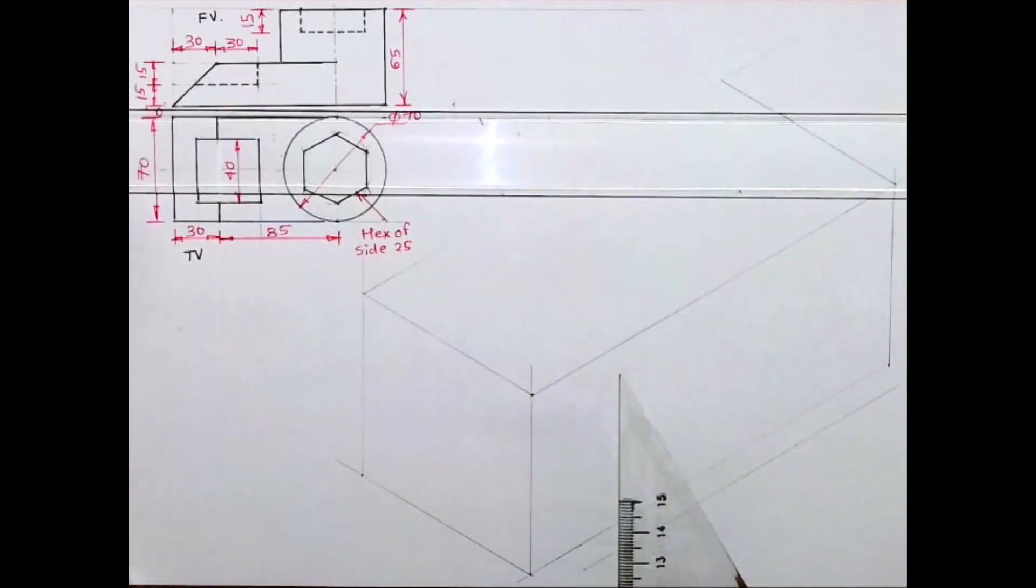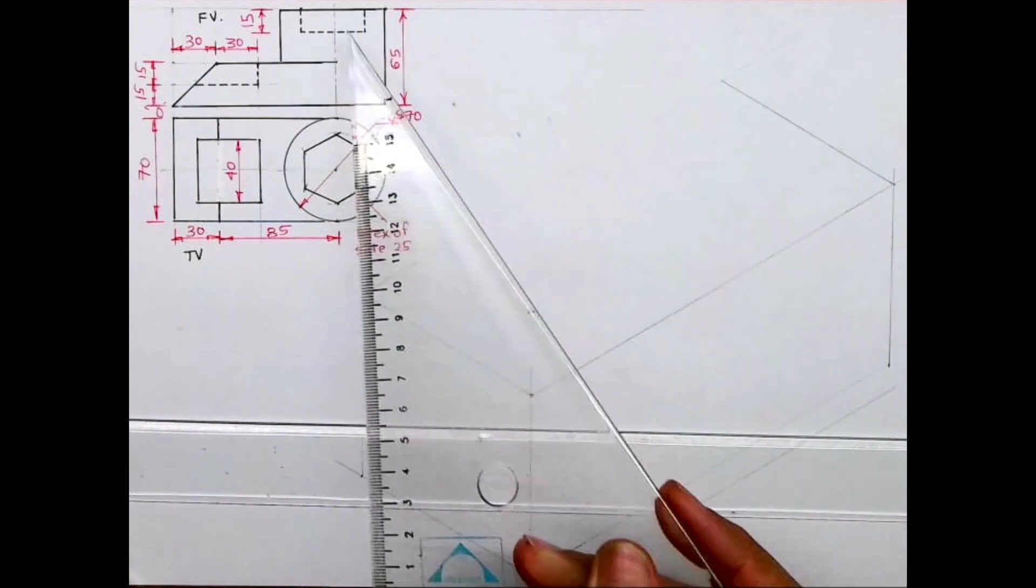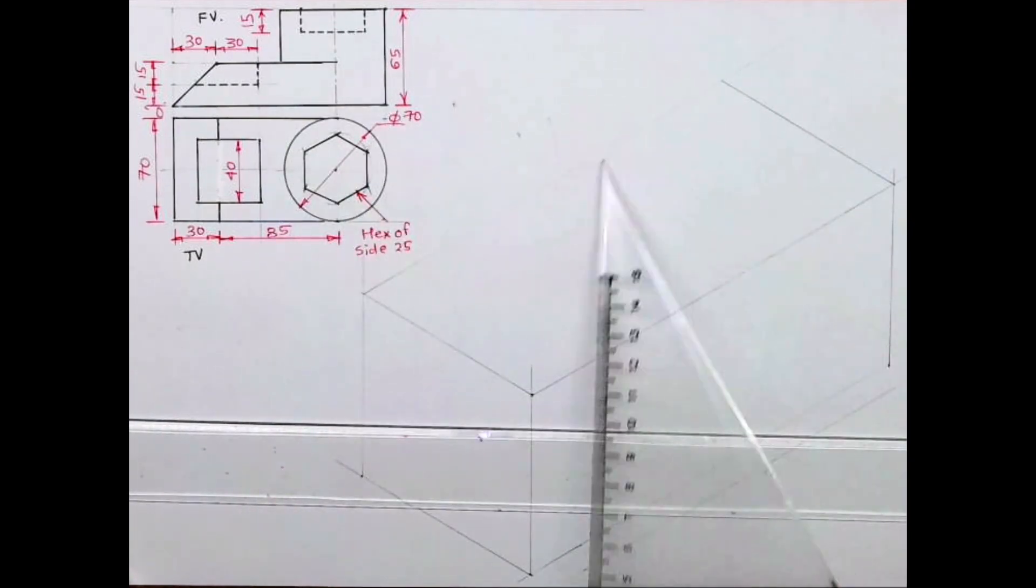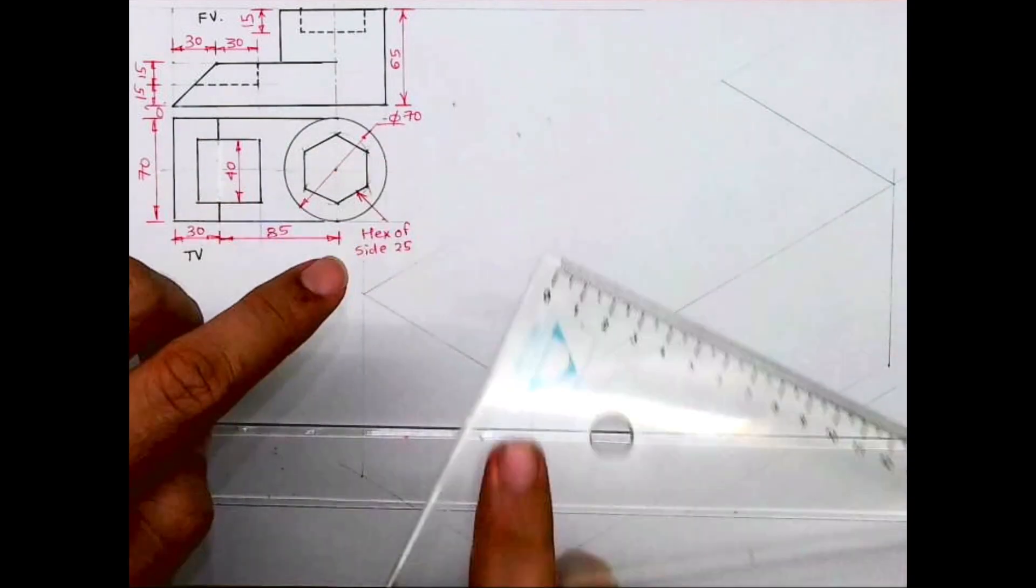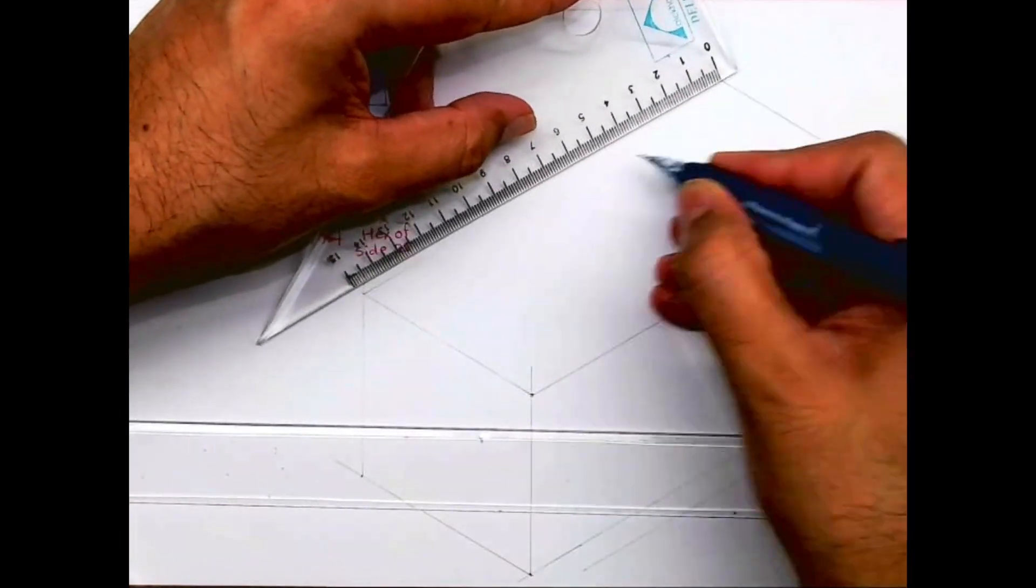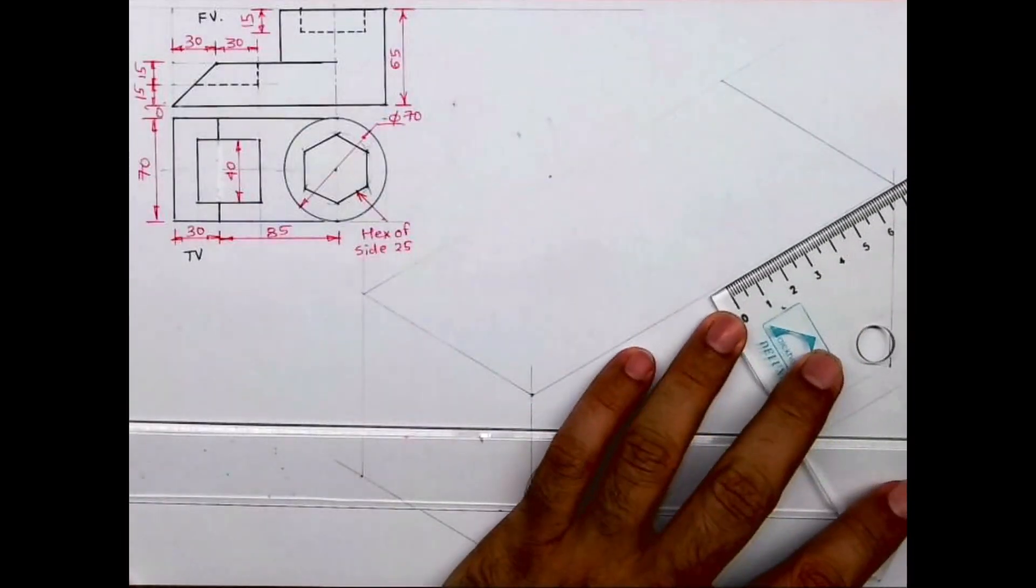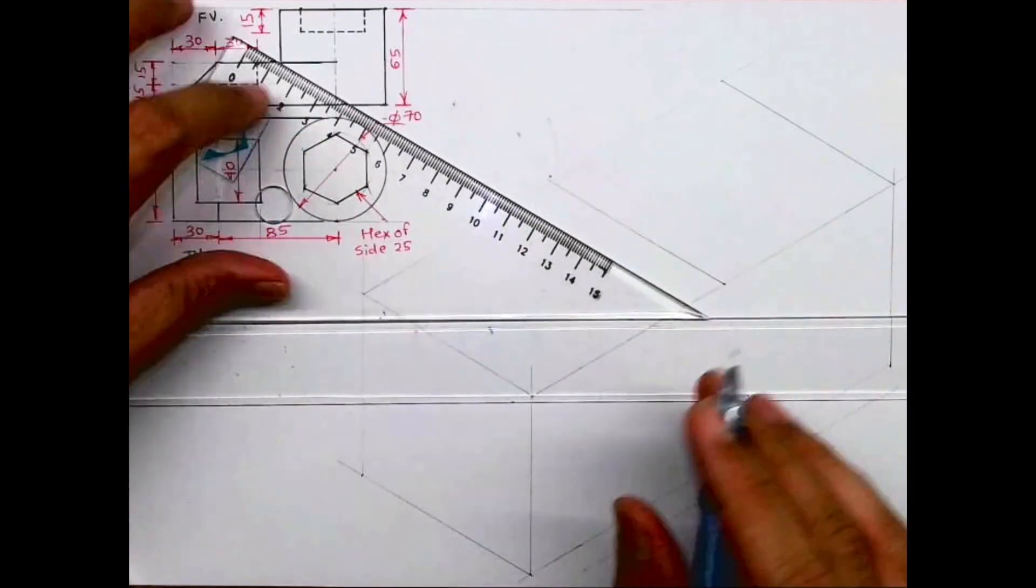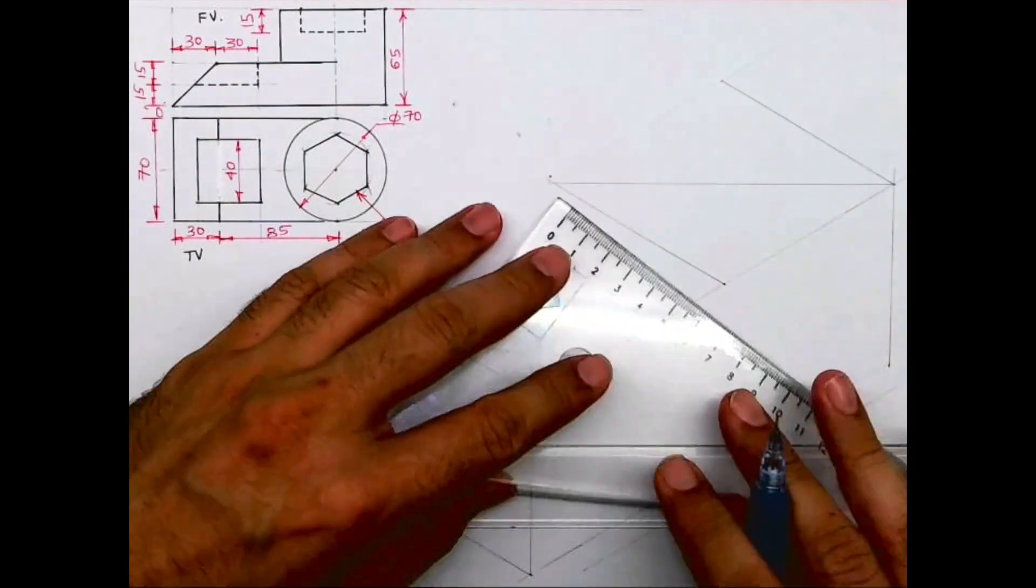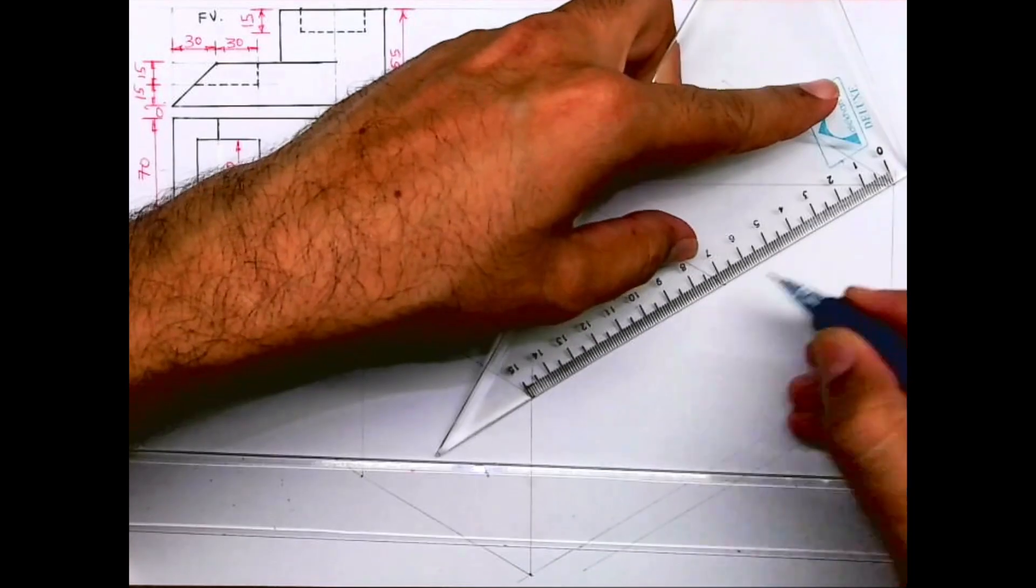We can start with this lower part or we can start with this circular part which is at the top. So I guess we'll start with the circular part. I'll mark 70, 70, then I will draw longest diagonal. I'll mark midpoint, midpoint.